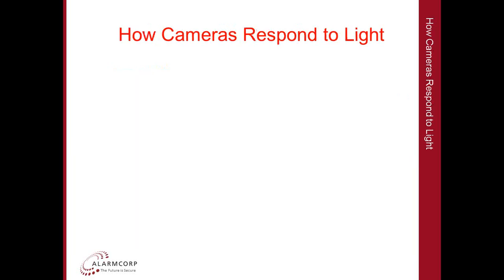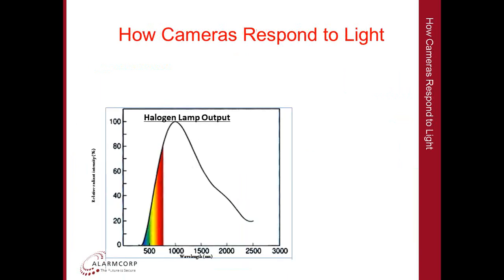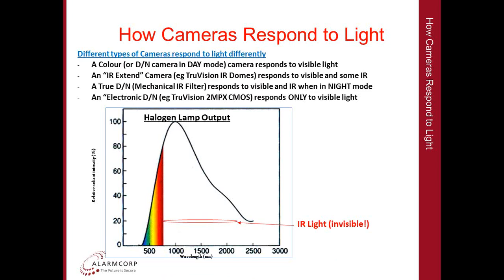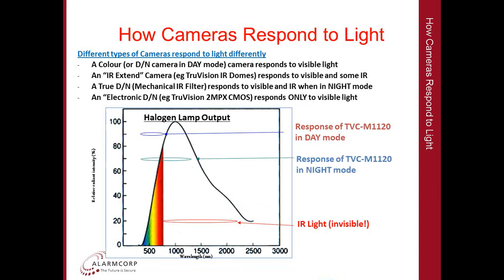Let's talk about how cameras respond to light. Revisiting the halogen lamp output: because a halogen lamp works by heating a filament, most of the energy is actually lost as heat, so the vast portion of output is infrared light, invisible to the naked eye. Different types of cameras respond to light differently. A color camera or a day-night camera in day mode responds to the visible light portion. An infrared-extended camera responds to visible light and some infrared. A true day-night camera with a mechanical IR filter responds to visible light and infrared light when in night mode. This is why a true day-night camera will always give you best performance with a halogen type light source.